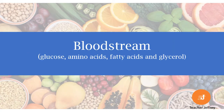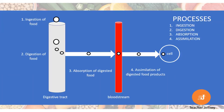To understand the process of assimilation, we need to start with the idea that the digested food products — such as glucose, amino acids, and products of fats — are in the blood. The last destination of these food products is the cell. They need to be delivered to the cell. This is the process for what we call assimilation.